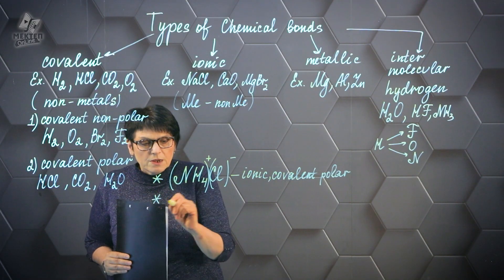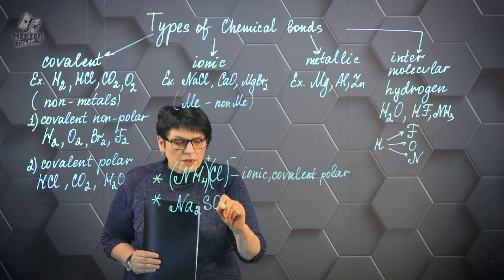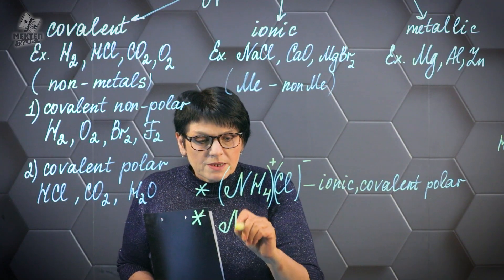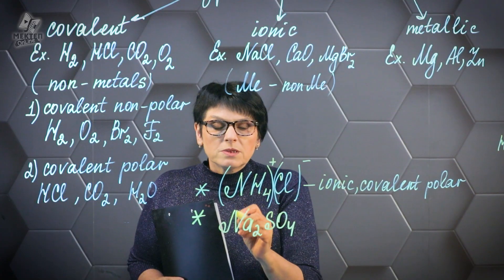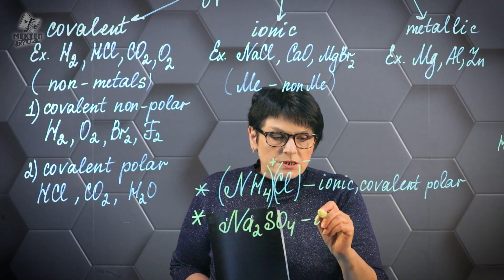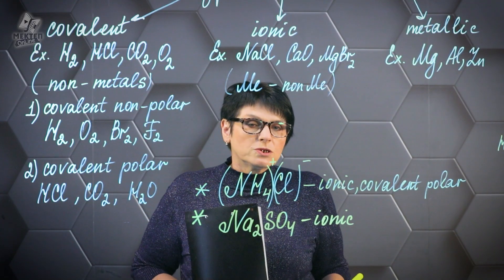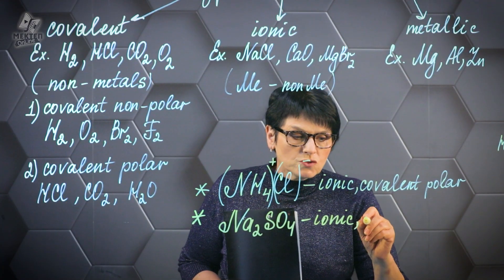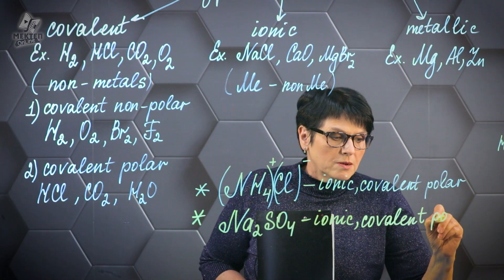Let's say sodium sulfate (Na2SO4). Sodium is a metal; sulfur and oxygen are non-metals. Of course, there is an ionic bond here. But in addition, there is also a covalent bond between sulfur and oxygen, and it is a polar bond.